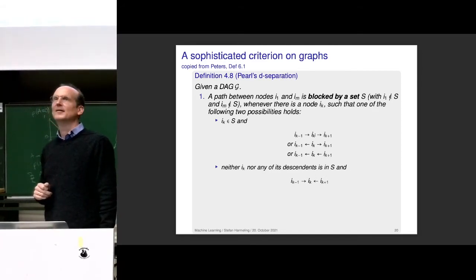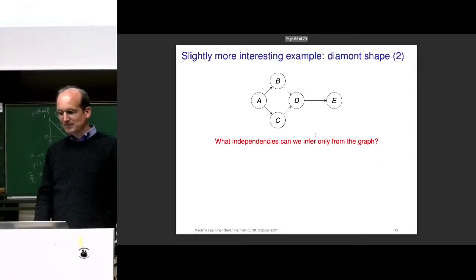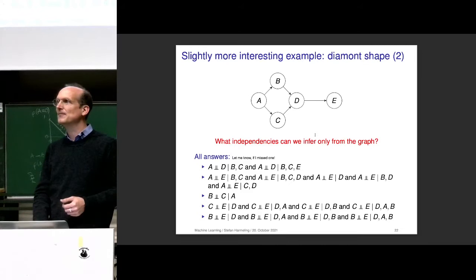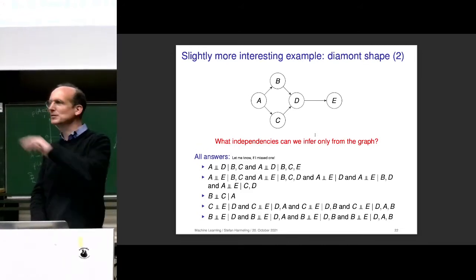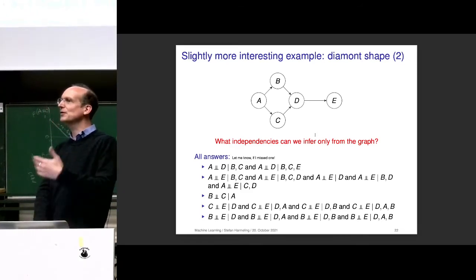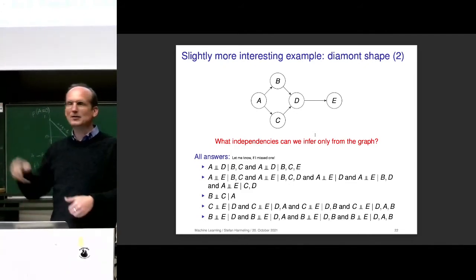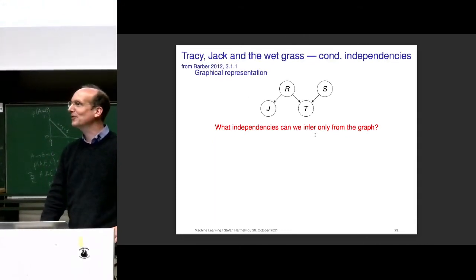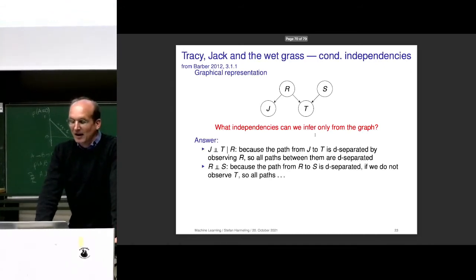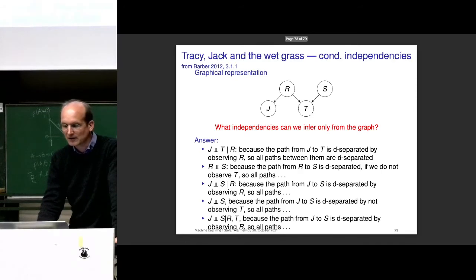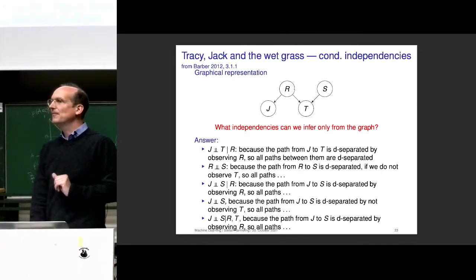So this is the example — if you understand this slide you are well prepared. D-separation is not simple and quite tricky — you have to go through all paths, which is not convenient but it's screaming to be mechanized. There actually is a package called Dagitty, a website where you can put in graphs and get the d-separation results automatically. You can play around with it, but you should be able to do it without Dagitty. Similarly, what can we infer now with these superpowers? J and T given R are independent because the path is d-separated by observing R.